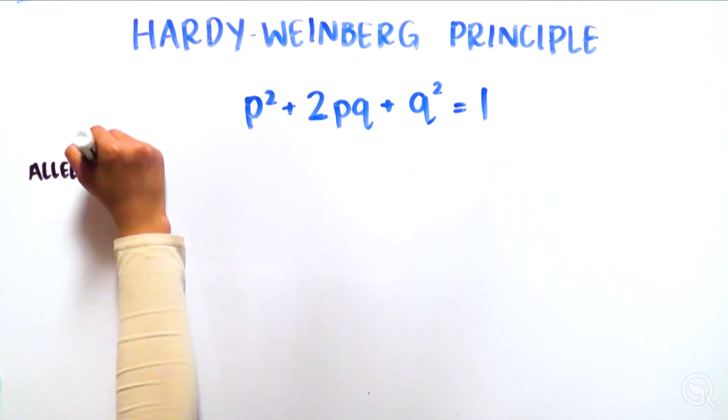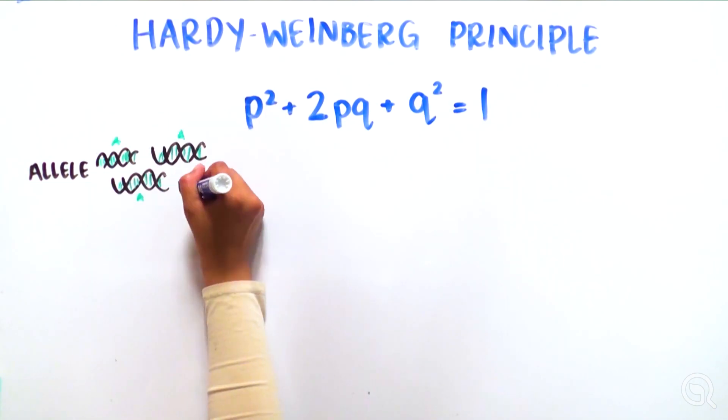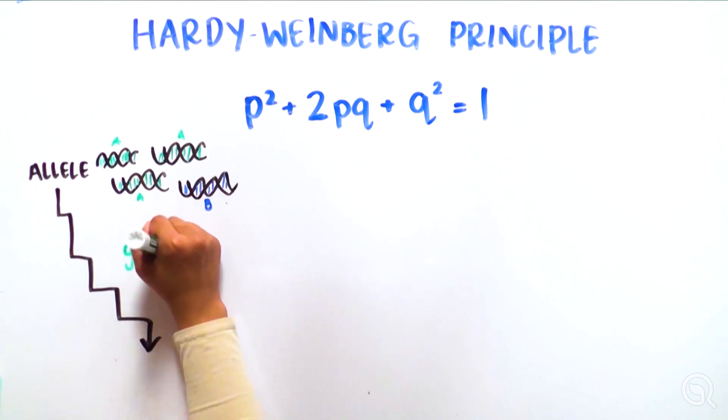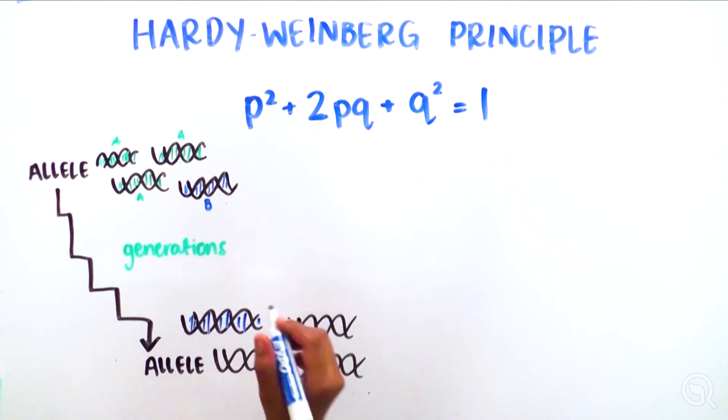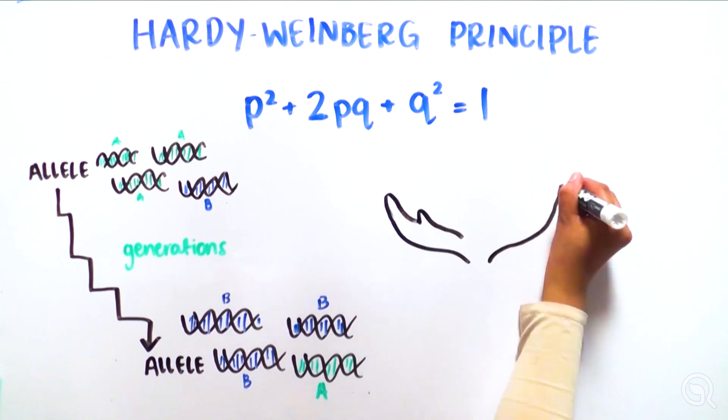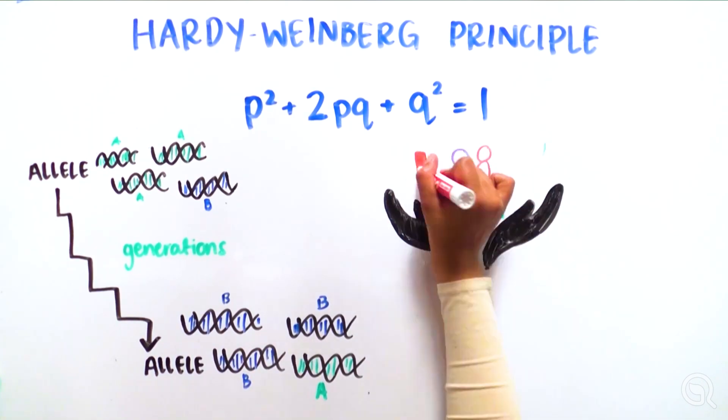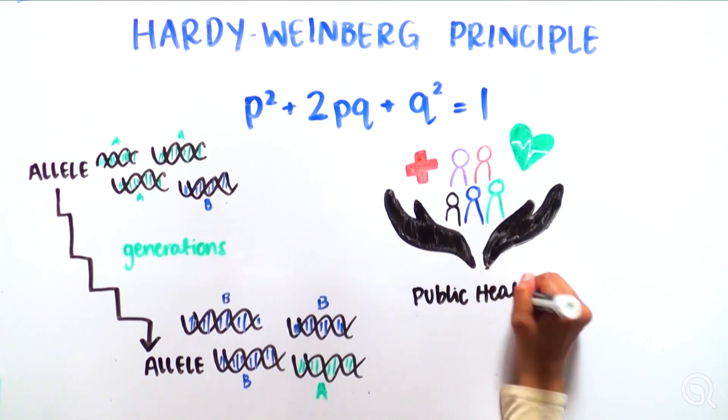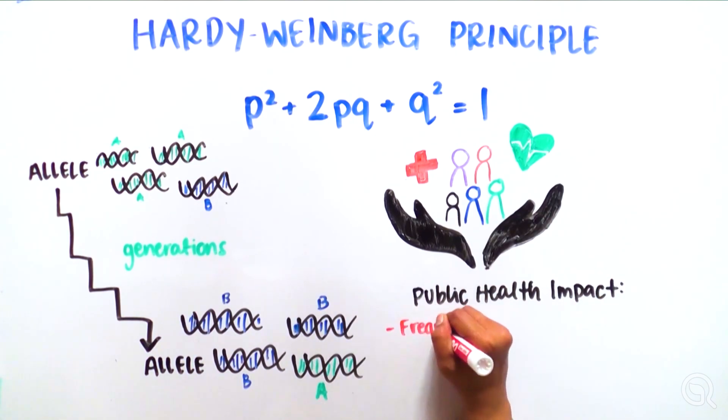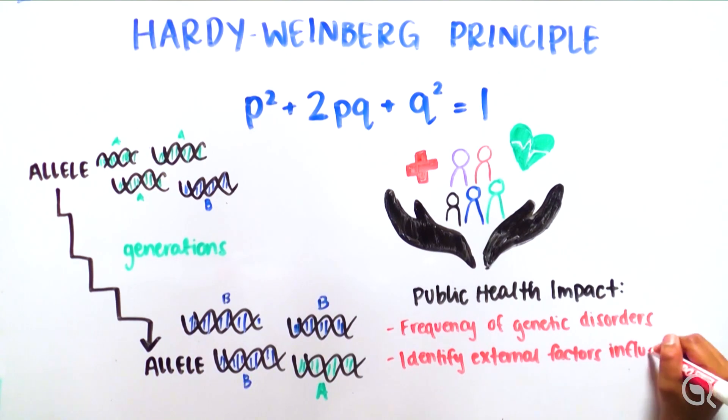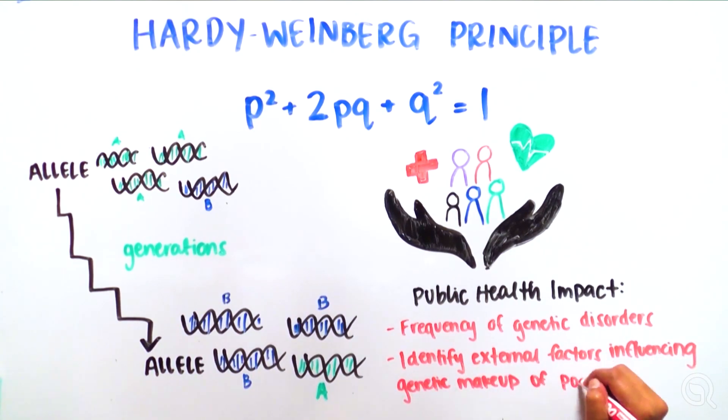The Hardy-Weinberg principle provides a framework to understand the evolutionary forces that influence how genes are passed down through generations. It allows geneticists to make important observations about the genetic makeup of a population that can guide public health decisions, such as estimating the frequency of genetic disorders or identifying external factors that are influencing the genetic makeup of a population. It's amazing the power of one simple mathematical equation.